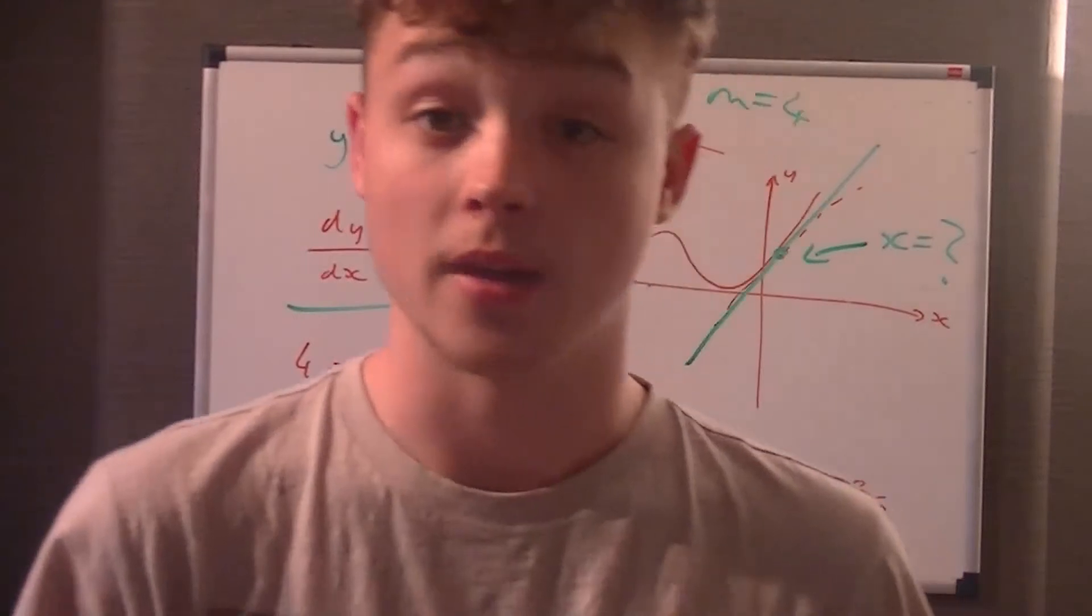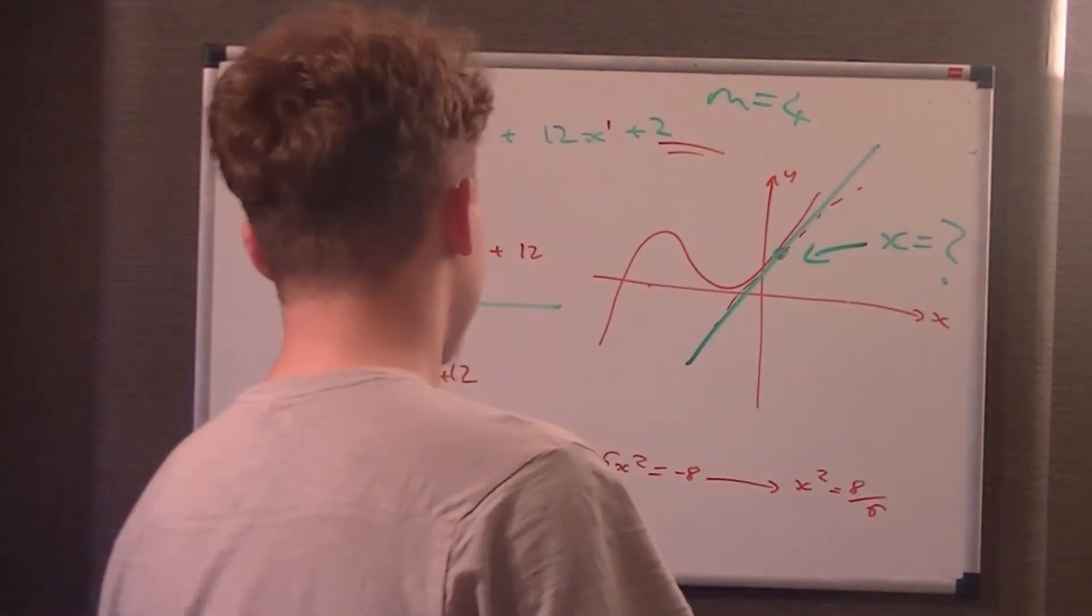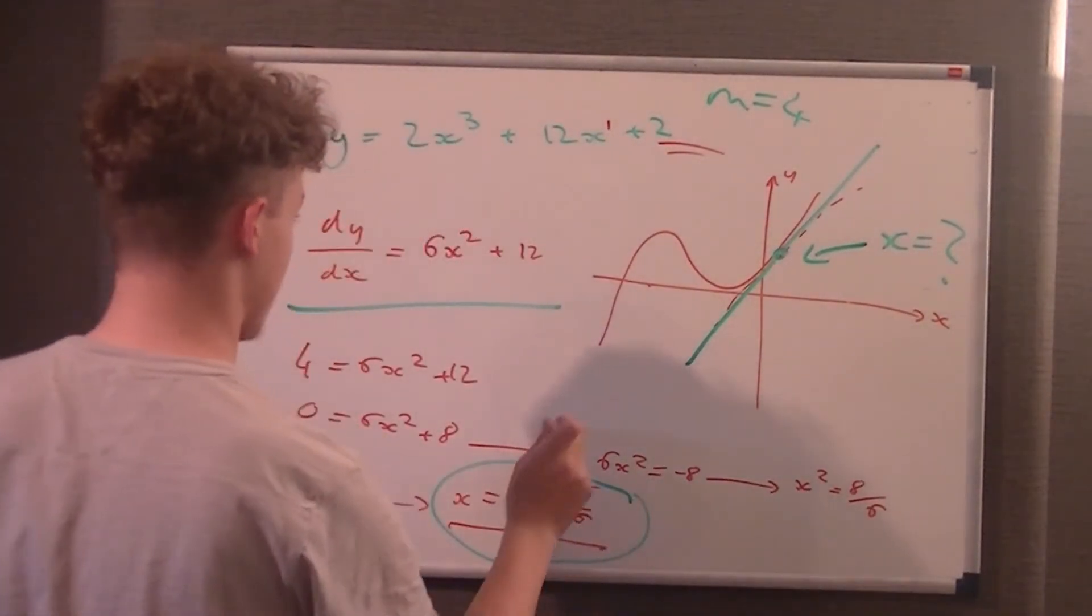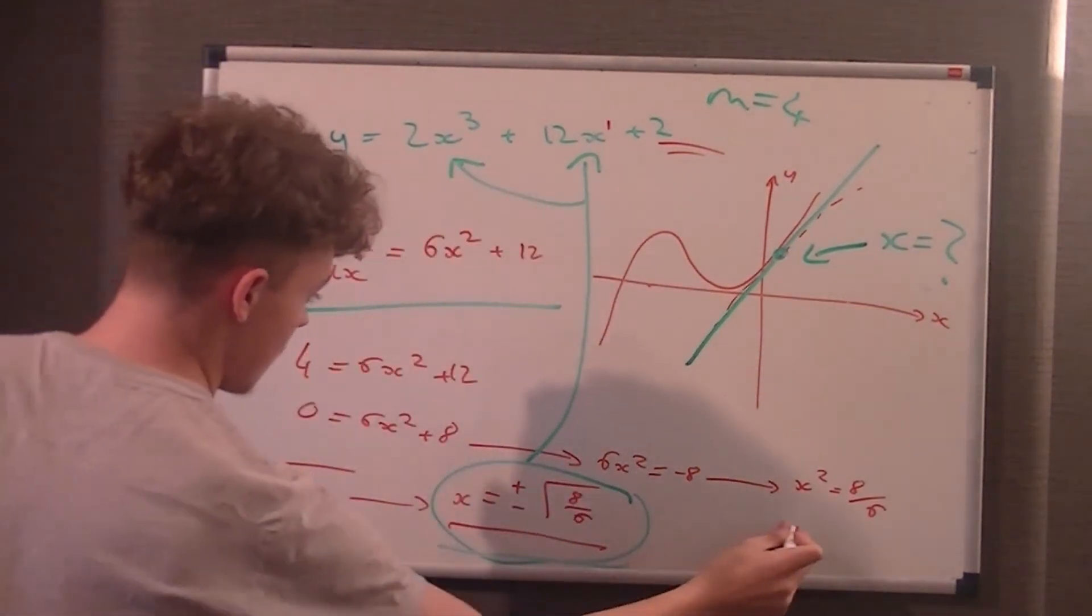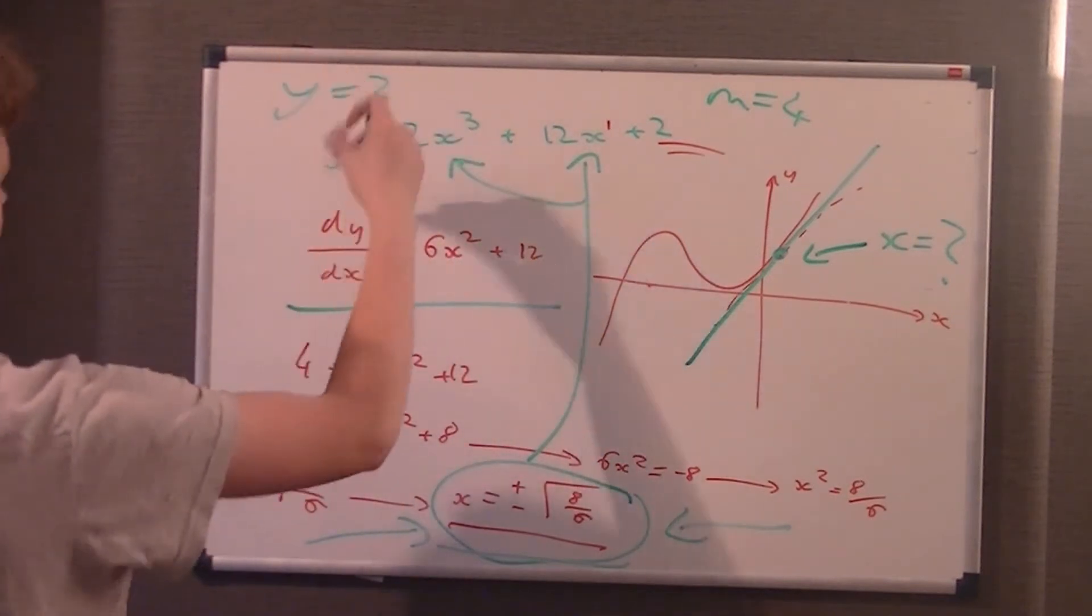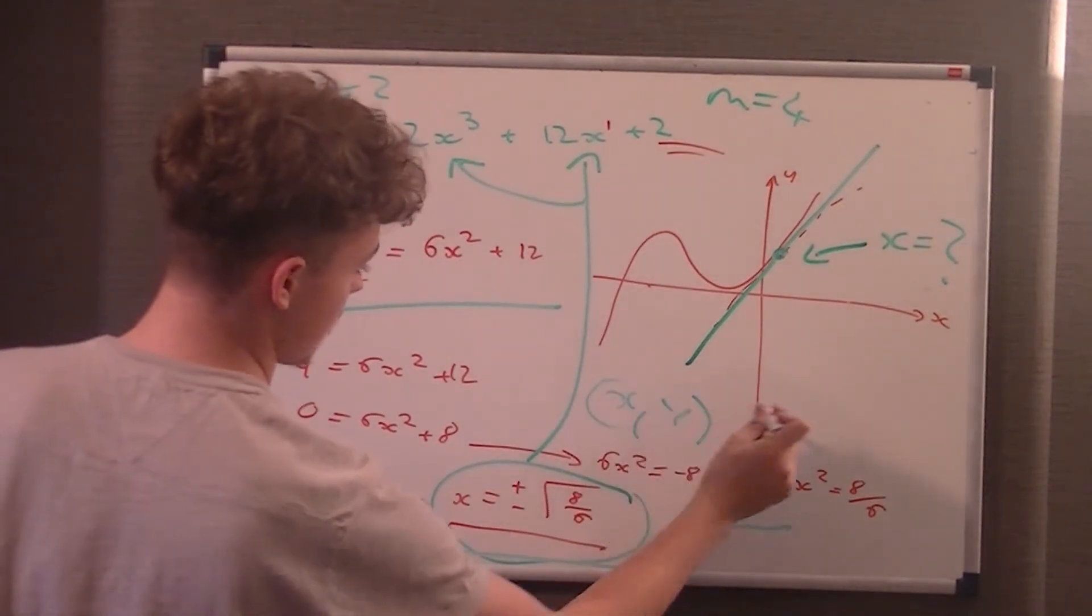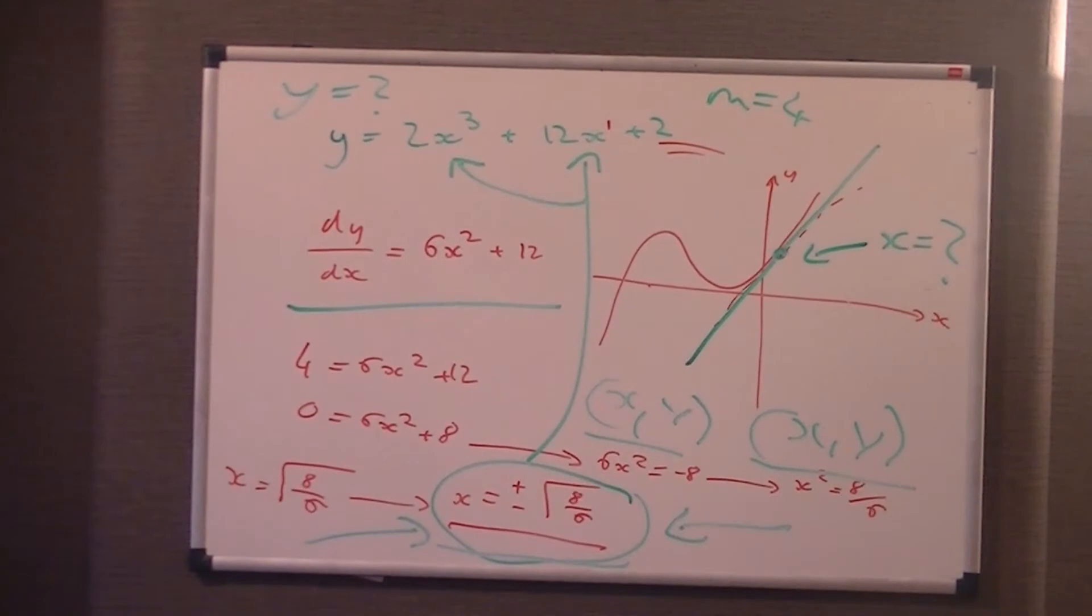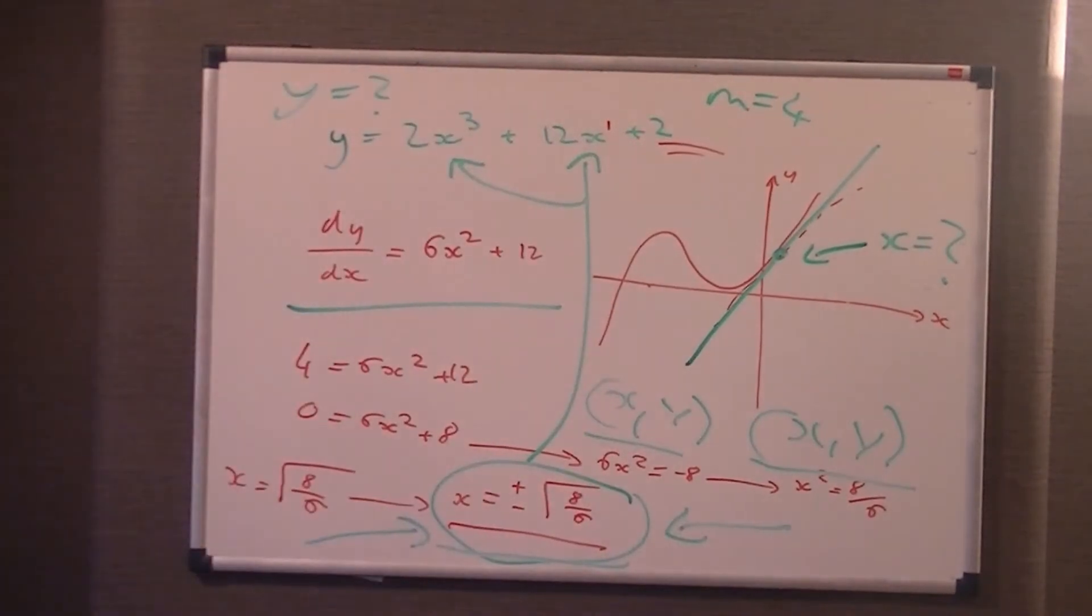Then it says work out the coordinates at the given point. You just substitute x equals plus or minus root 8 over 6 into your equation for y, and you get the y value. This value of x would go into the equation there, and you substitute to get the y value. You'd have two coordinates, x and y, and that would give you your coordinates at the point where the gradient is 4.